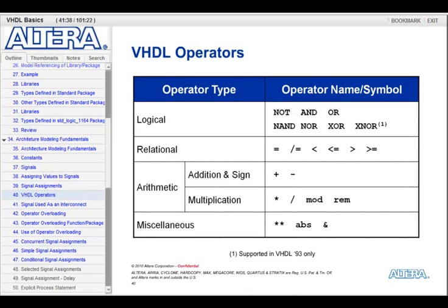For relational operators, we have equal, not equal, less than, less than or equal to, greater than, and greater than or equal to. For arithmetic, we have plus and minus for addition and subtraction — those same two symbols can indicate sign — multiplication indicated by the star, division by the slash, and you can also do modulus and remainder. For miscellaneous operators, double stars represent exponentiation, 'abs' represents absolute value, and the ampersand represents concatenation. Thus, I can take two 4-bit vectors and concatenate them together to create a single 8-bit vector.